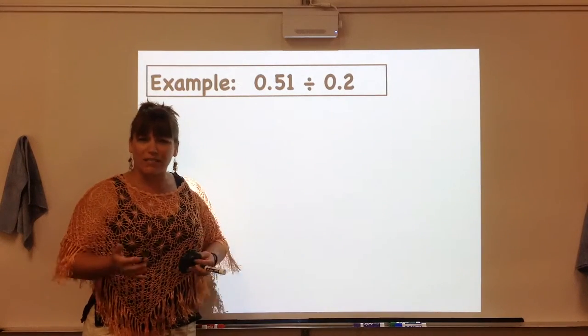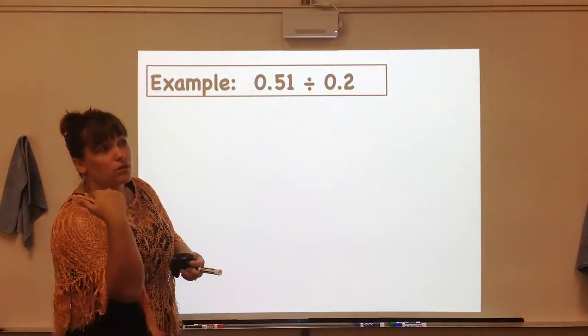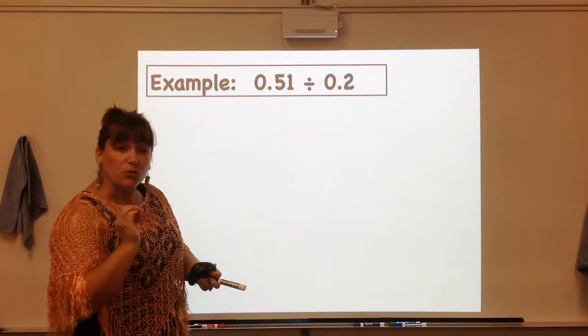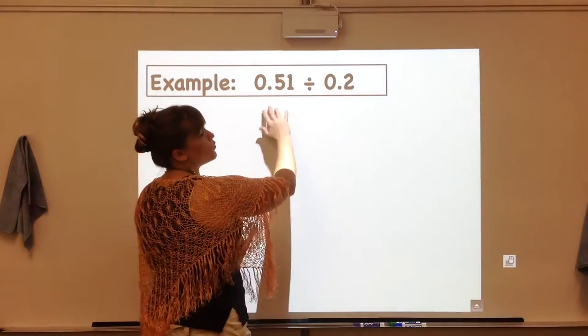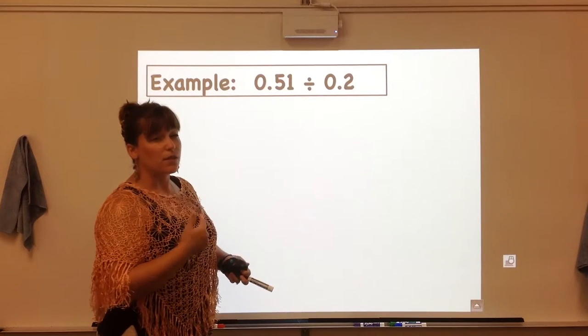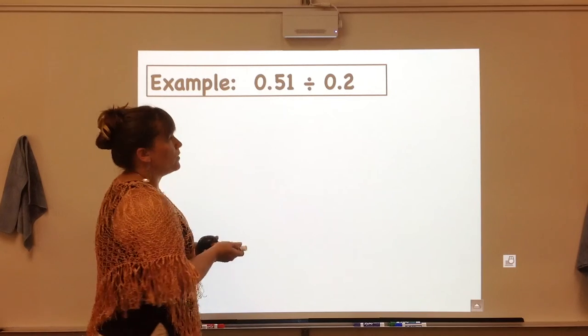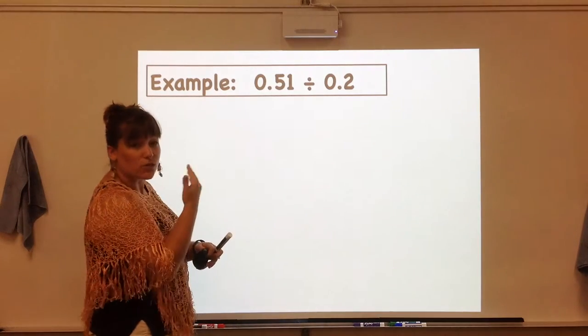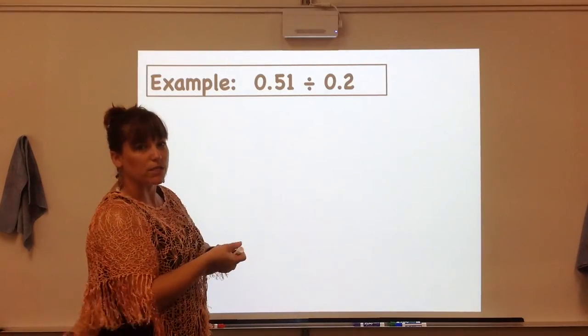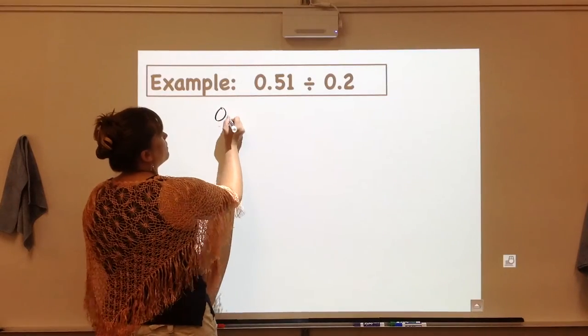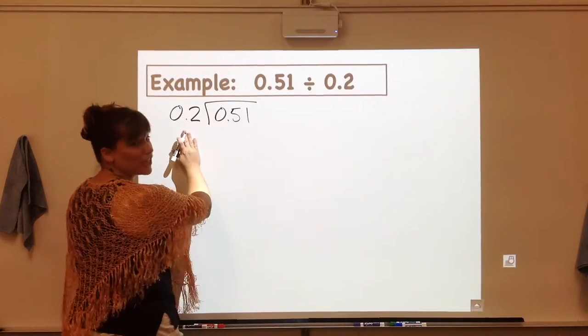So here's our example, no context, just straight please divide these numbers. The notes that we took on the different ways to show division is very important for this lesson because you have to know which one is the dividend and which one is the divisor. Because we know when you're showing division horizontally the first number is always the dividend, so we're going to put the 0.51 inside and then the 0.2 outside as our divisor.